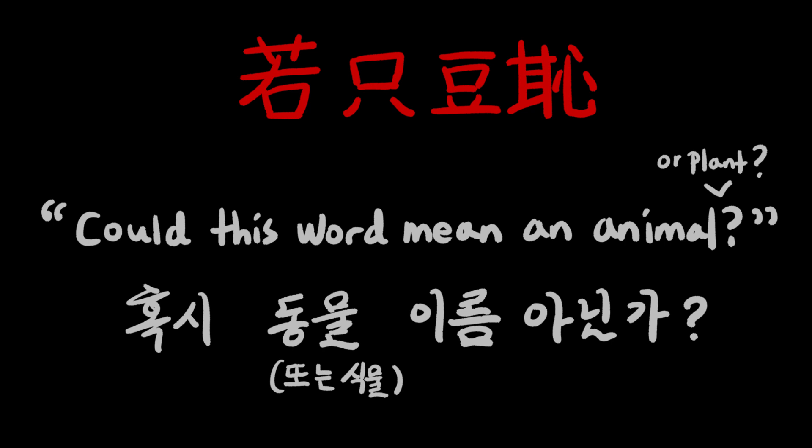My initial thought was: is this some kind of an animal or plant name? I thought this because nearby this ancient town was a village named Tosangun, which means rabbit mountain village. And to somewhere in the east was a village named Yashime, which means fox lakeside. There was also a town called pig foot. What I'm saying is that there were quite a few villages or towns named after animals in ancient times. So logically, Yakjiduchi could have been also an animal name.